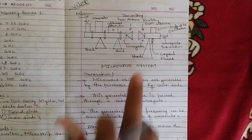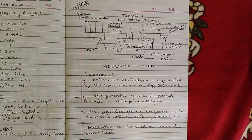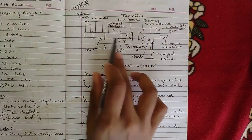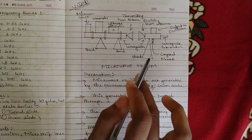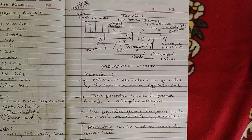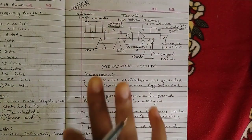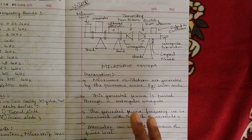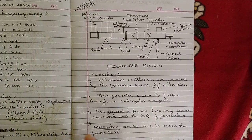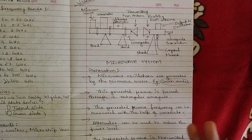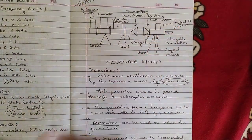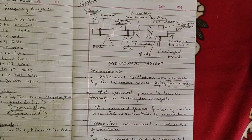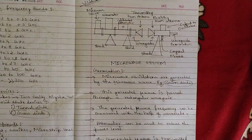Please make a note of this diagram — it is very important. Draw it neatly using a scale, and write the generation, reception, and construction points carefully to score full marks. That's all for this video. I've given a brief introduction to the subject, IEEE frequency bands, microwave devices, components, and the microwave system. In the next video we will cover the Gunn Diode and the Gunn Effect. Stay tuned, like this video, subscribe to our channel, and let all your 7th semester friends know that we're back with these videos.